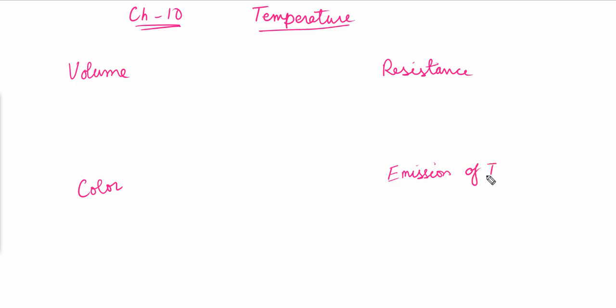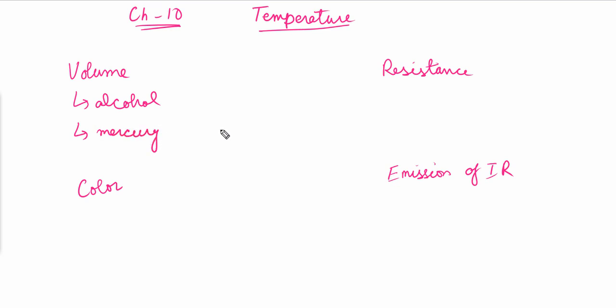Let's start with volume. What happens to the volume if we increase or decrease the temperature? We will discuss the examples of alcohol and mercury. If we increase the temperature of alcohol, its volume increases — it expands. The same happens with mercury: it expands, its volume increases. So the physical property that changes for alcohol and mercury with an increase in temperature is their volume.